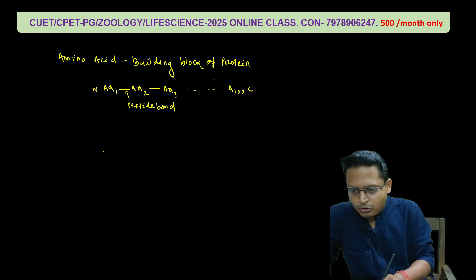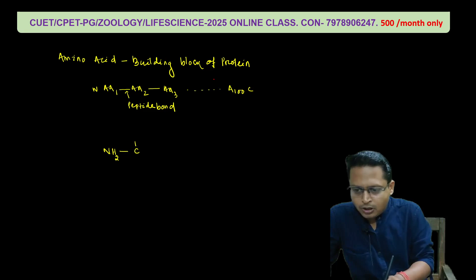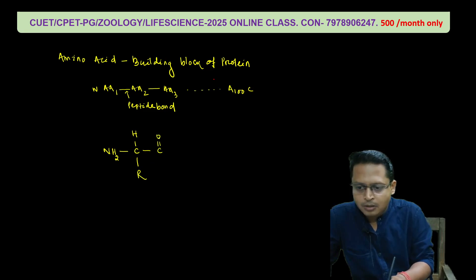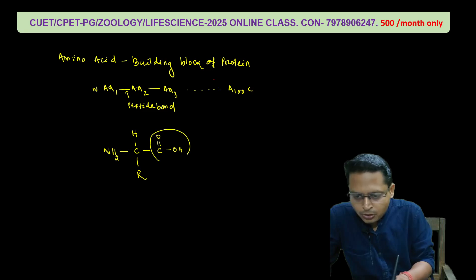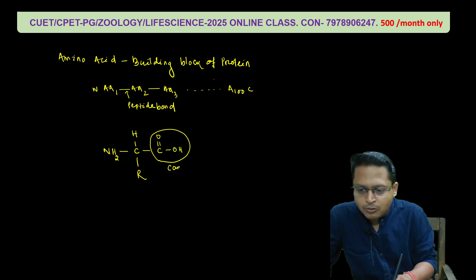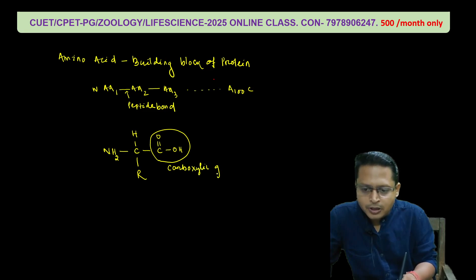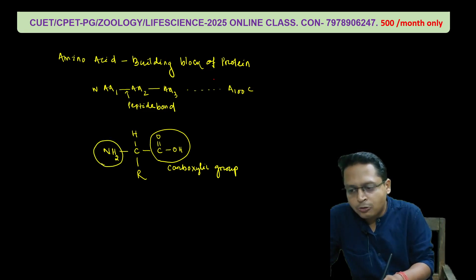When we study the structure of amino acid, we see the common amino acid structure. There is a central carbon, an R group, and a C double bond O — OH. So if you look at this group, this is the carboxylic group. This group is the amine group — primary amine group.